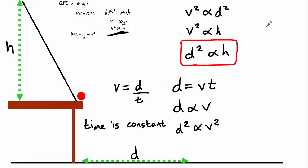This means that if you plotted a graph of height against the distance squared, it should produce a straight line relationship between the two quantities. It also means that in order to get twice the distance travelled horizontally, you would have to have a height that is four times higher.